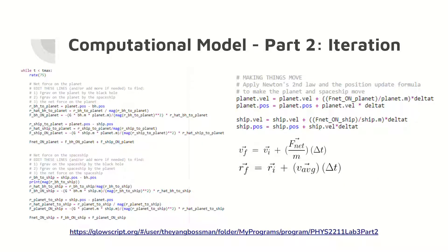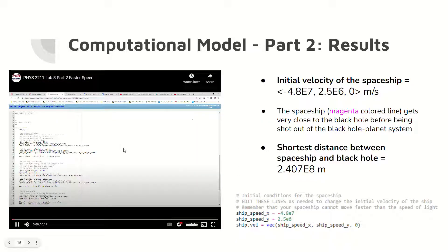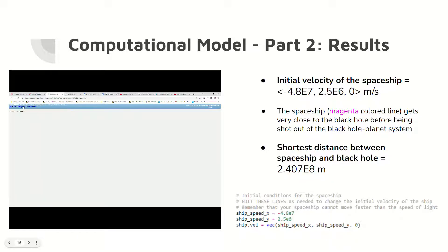Here is the iteration step in part two of the lab. Importantly, the velocity update formula and position update formula are also used in this step for update purposes. For the results in part two, the initial velocity of the spaceship is negative 4.8 times 10 to the 7, 2.5 times 10 to the 6, 0 meters per second.